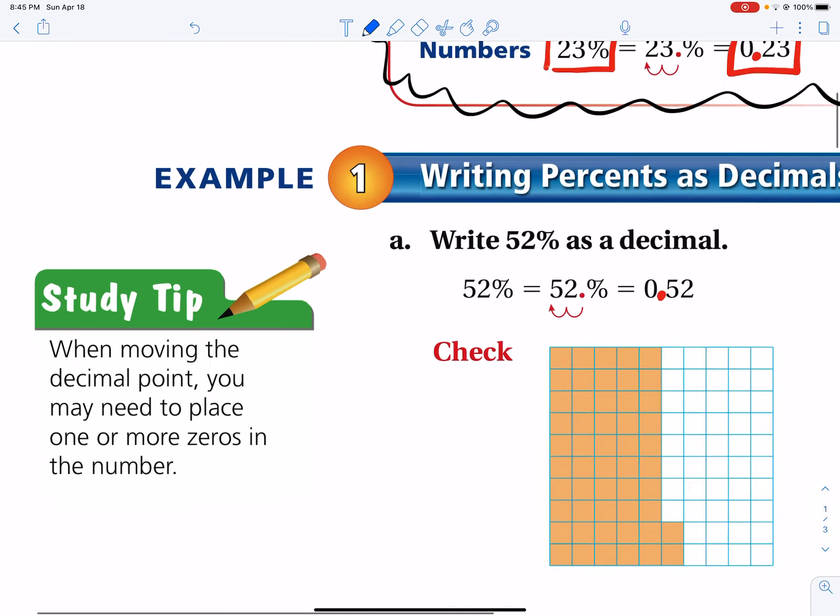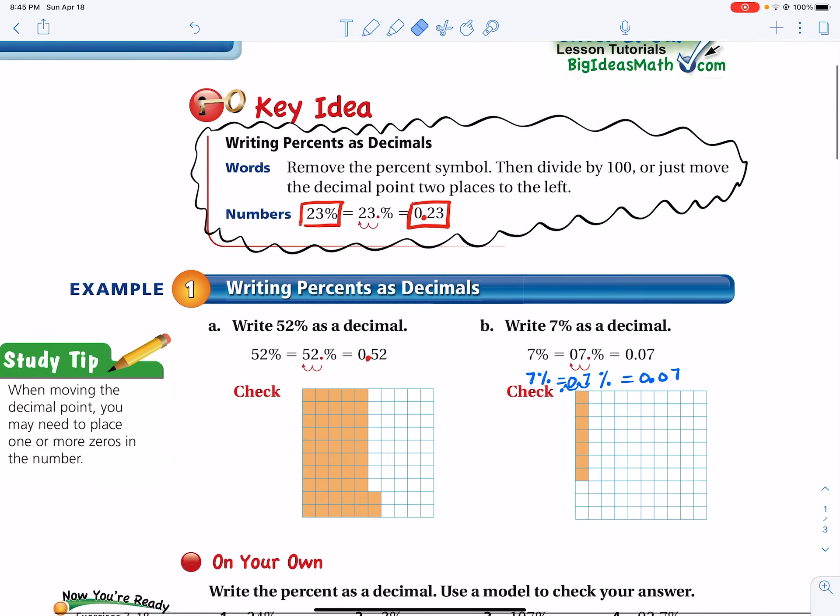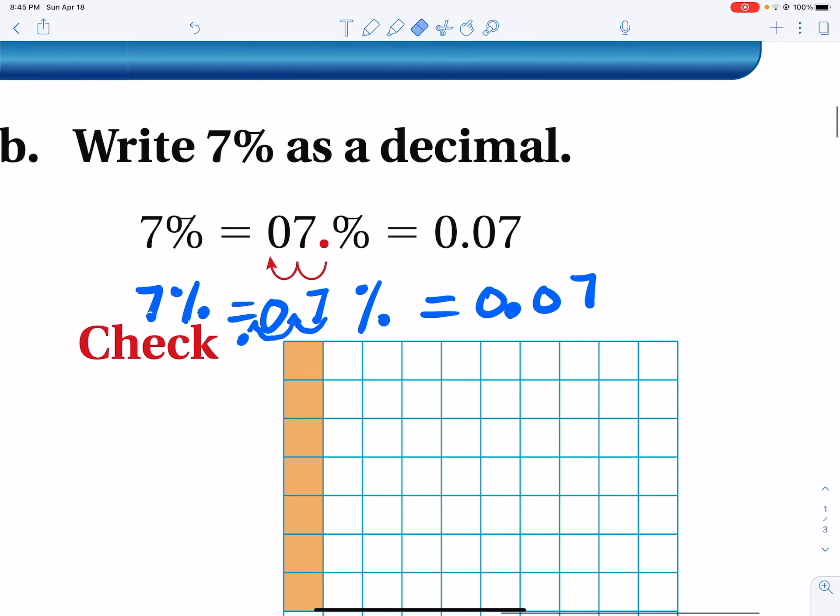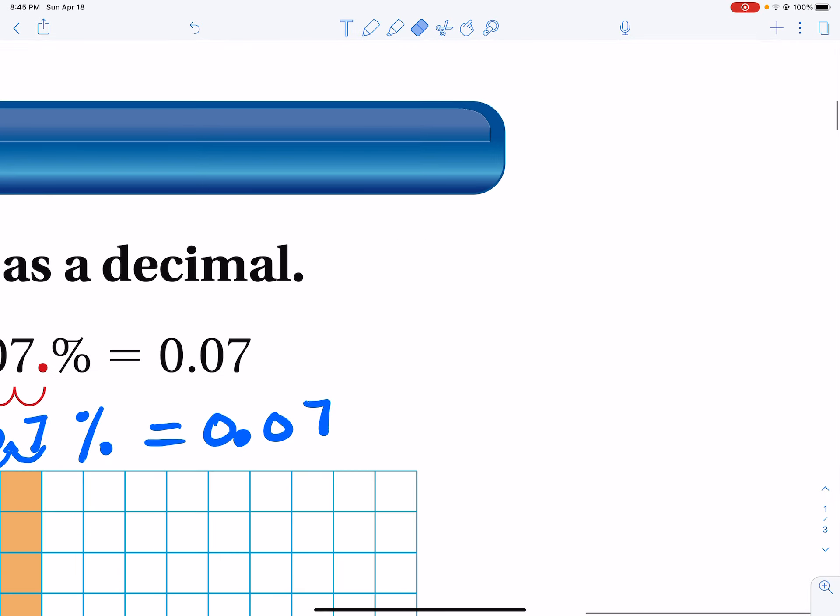Look, when moving the decimal point, you may need to place one or more zeros in the number. Yes, may need to move that decimal. And when you move it, if there's an empty space, you add a zero. And there's plenty of examples of that.